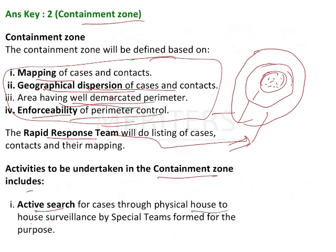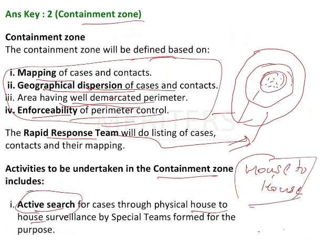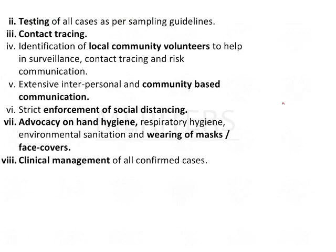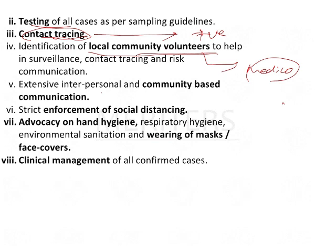The rapid response team will do active search — house-to-house surveillance. Active search means going house to house. Passive search means waiting in the containment area and asking suspected cases to come to them. But here, the rapid response team conducts active search. Immediately after getting positive results, they start tracing cases. They also ask local community volunteers to assist, since not all medical staff are well-versed in the local area.